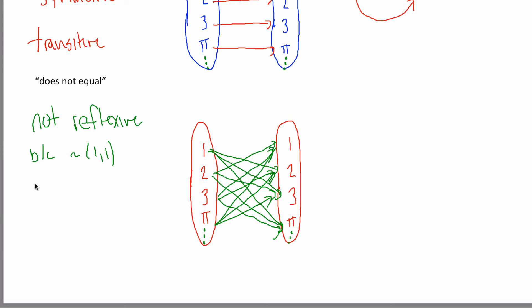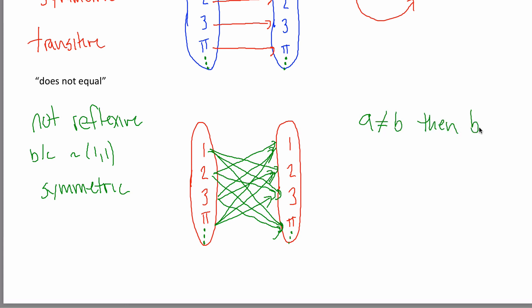Is 'does not equal' symmetric? Hell yeah it is — it is symmetric. If I have an arrow from 1 to 2, it's because 1 does not equal 2. And if there's an arrow from 1 to 2, there must be an arrow from 2 to 1, because if A does not equal B, then B does not equal A. So it's symmetric.